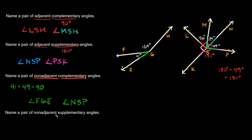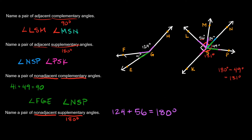Now the last one says: name a pair of non-adjacent supplementary angles — angles that are not next to each other and add up to 180 degrees. Here it would be this 124-degree angle and this 56-degree angle, because 124 plus 56 equals 180 degrees. So that would be angle FGH and angle LSM.